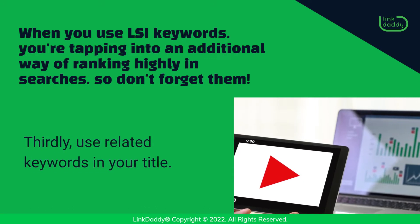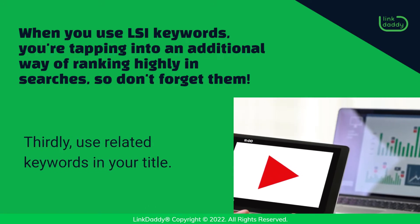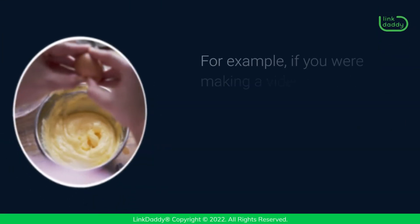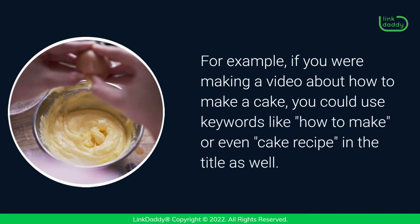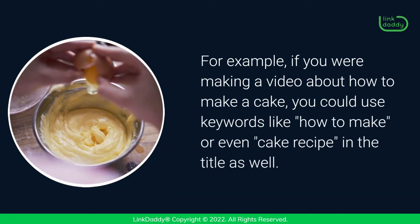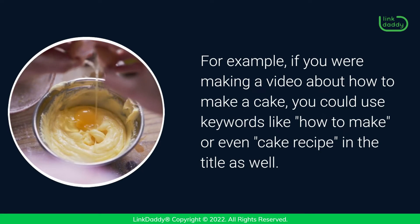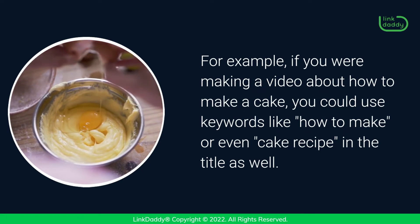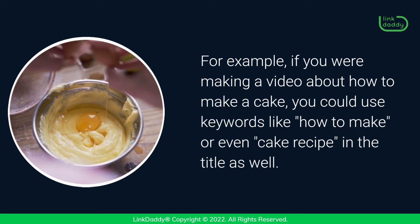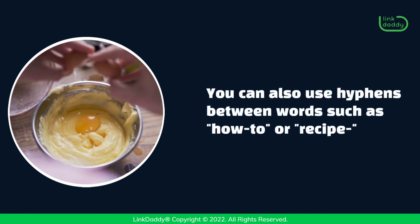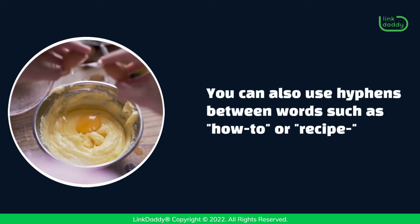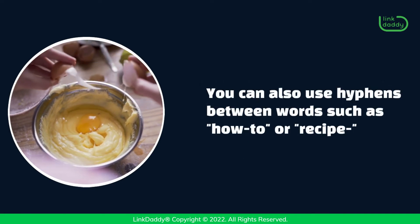Thirdly, use related keywords in your title. For example, if you were making a video about how to make a cake, you could use keywords like "how to make" or even "cake recipe" in the title as well. You can also use hyphens between words such as "how to" or "recipe".